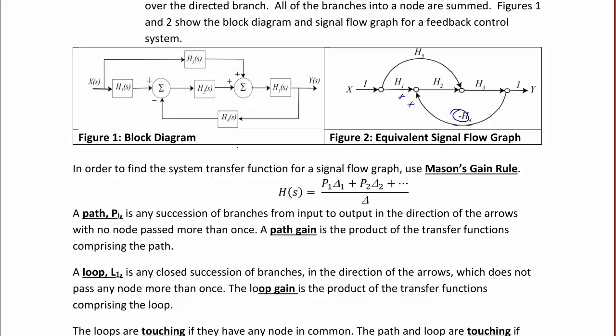So now let's review Mason's Gain Rule, which you probably also studied in ECE 205, and talk about how to get the transfer function from a signal flow graph. In order to find the transfer function for a signal flow graph, we use Mason's Gain Rule, where H(s) is equal to P1Δ1 plus P2Δ2 plus and so on over Δ.